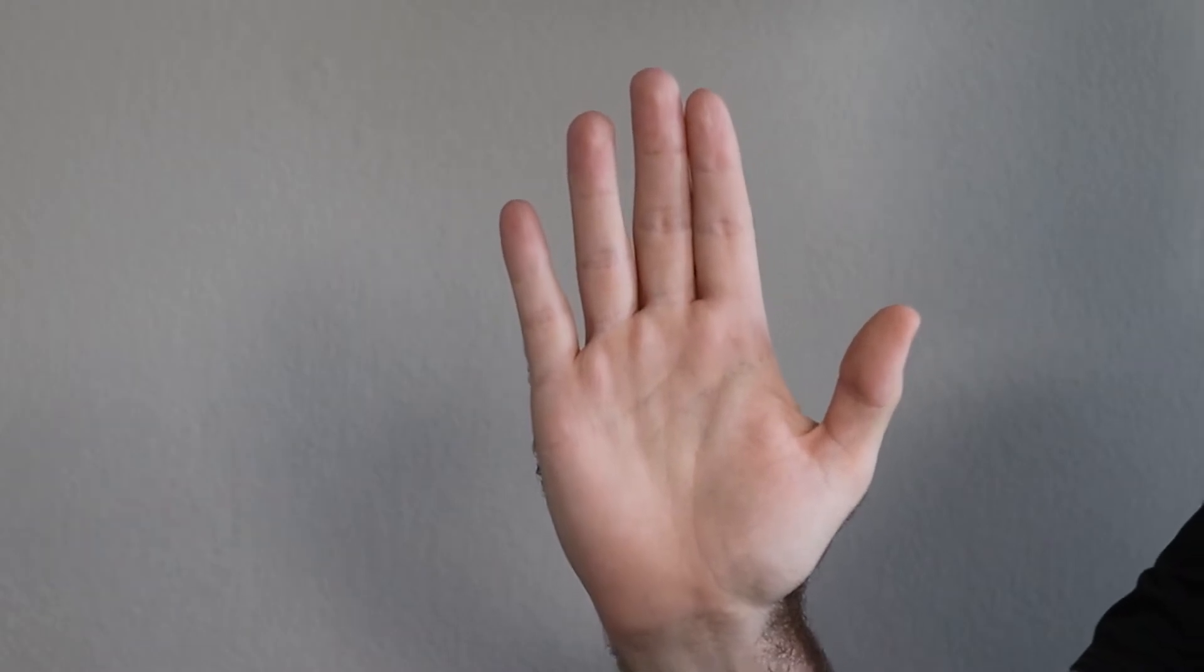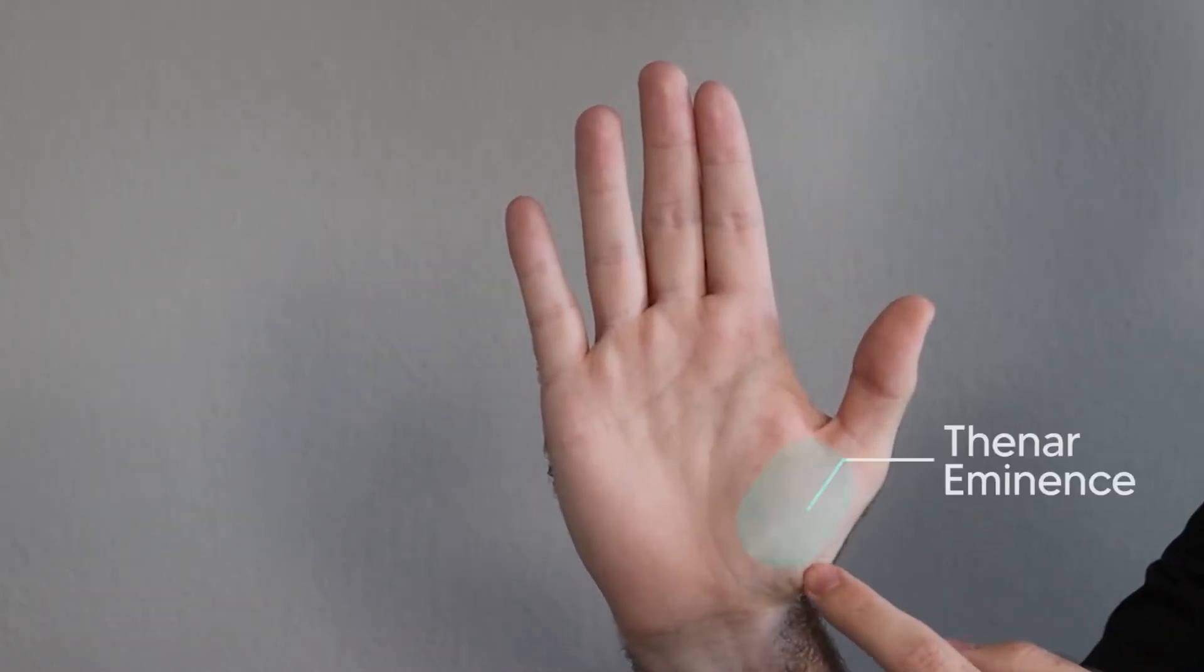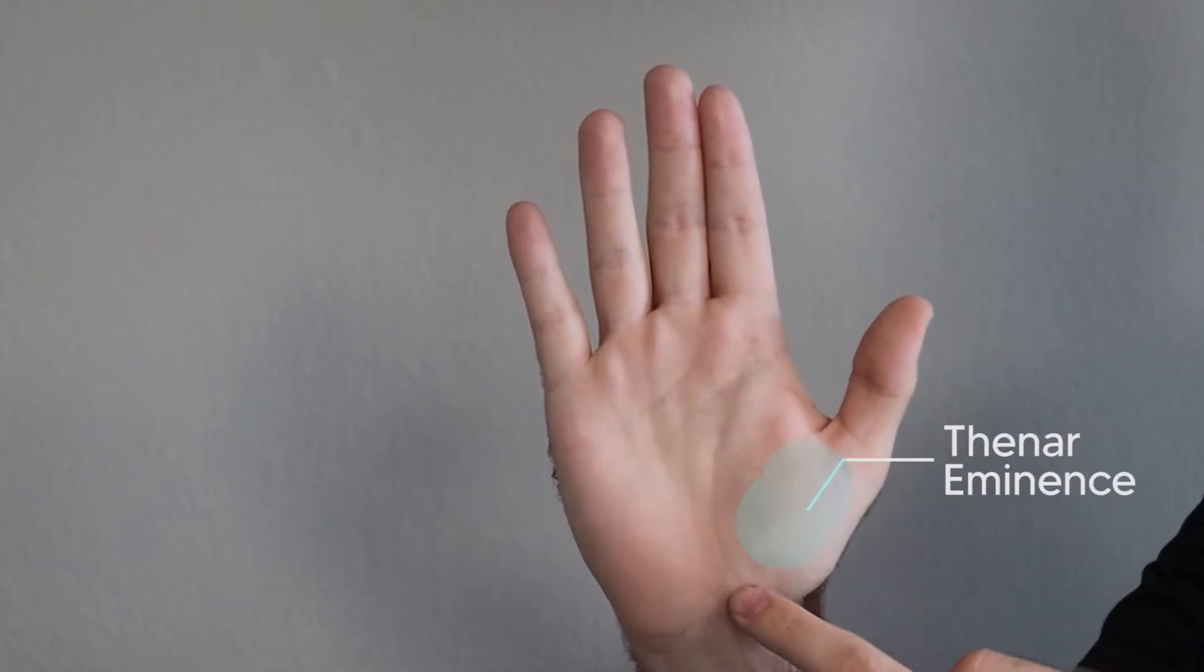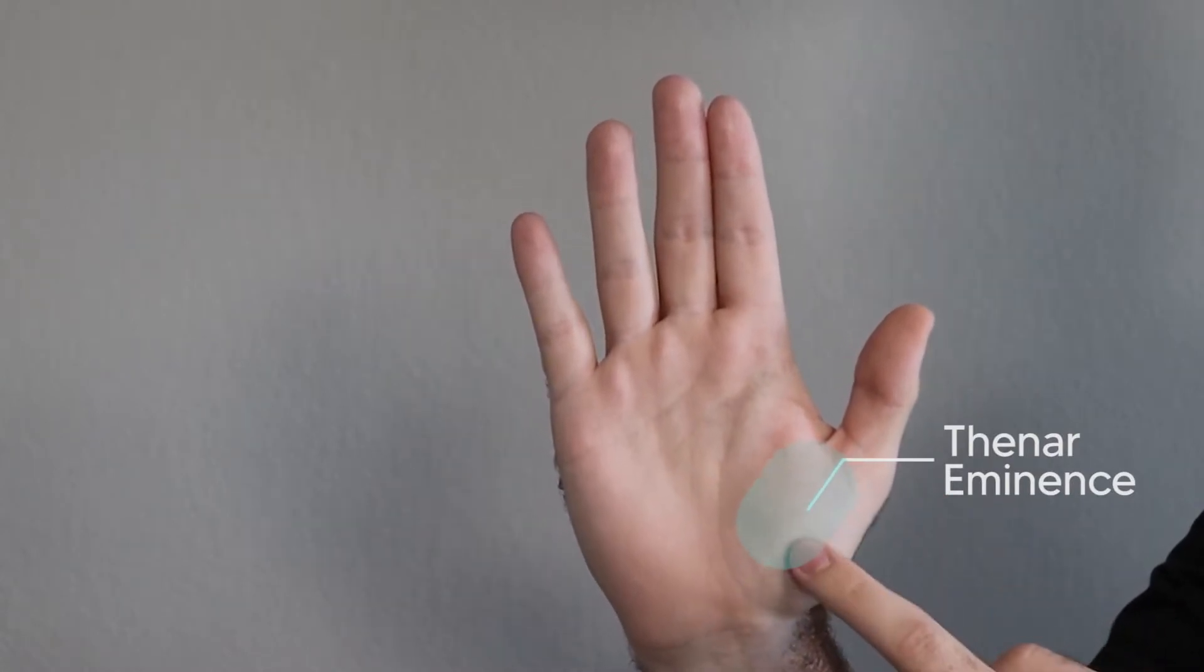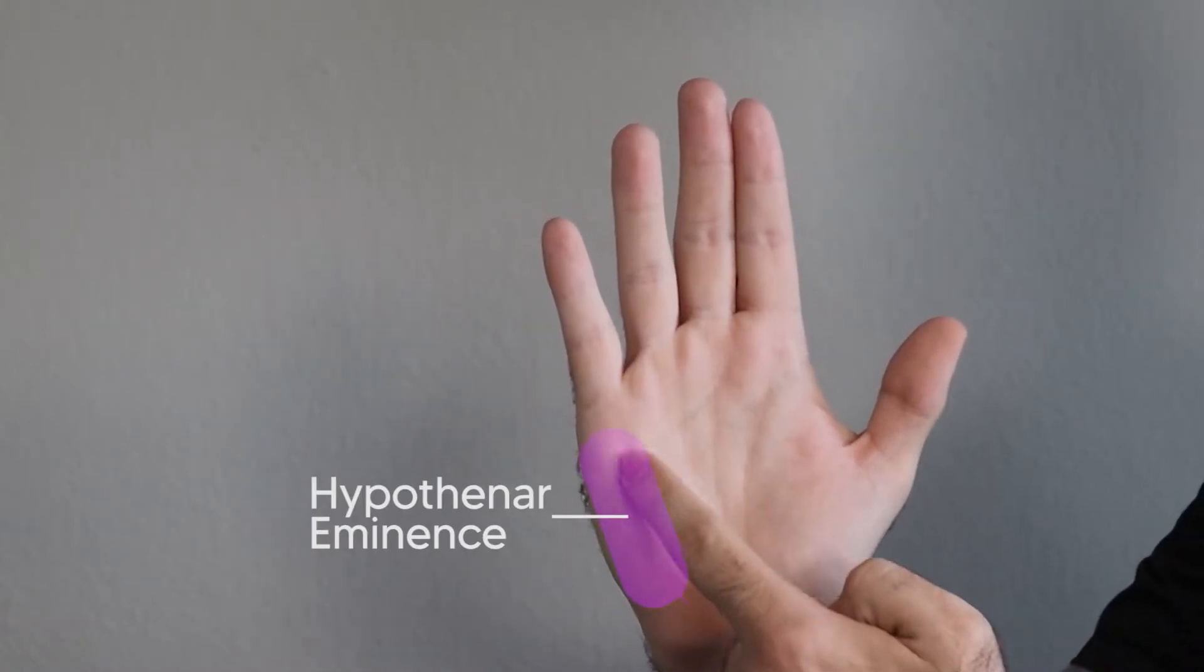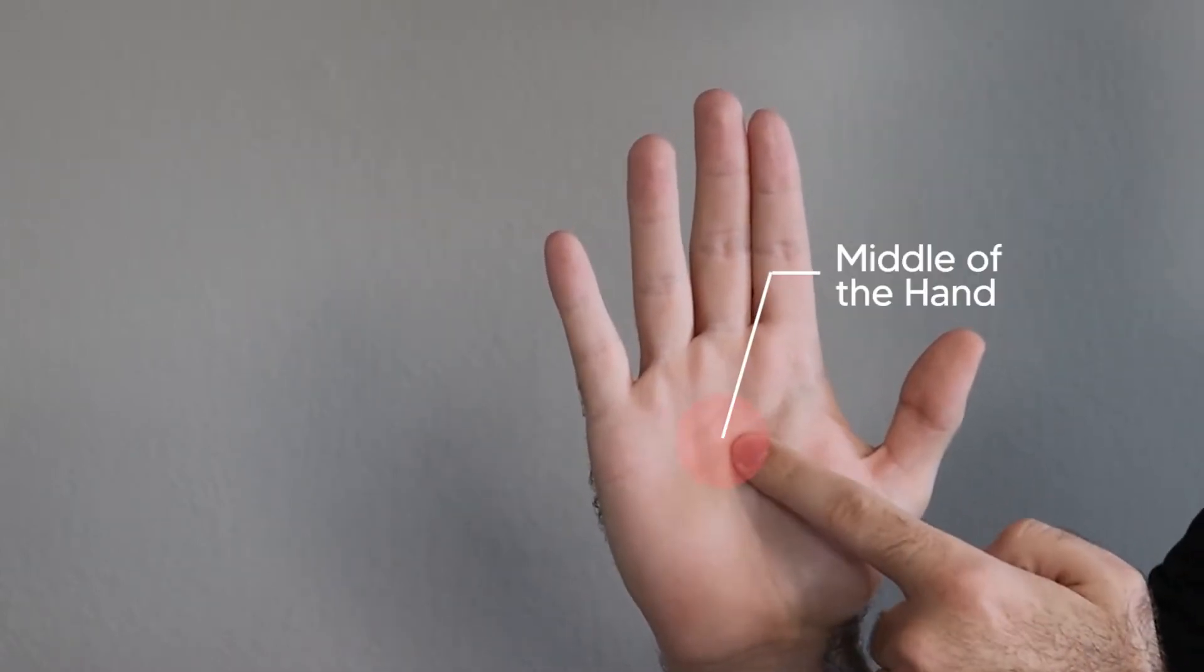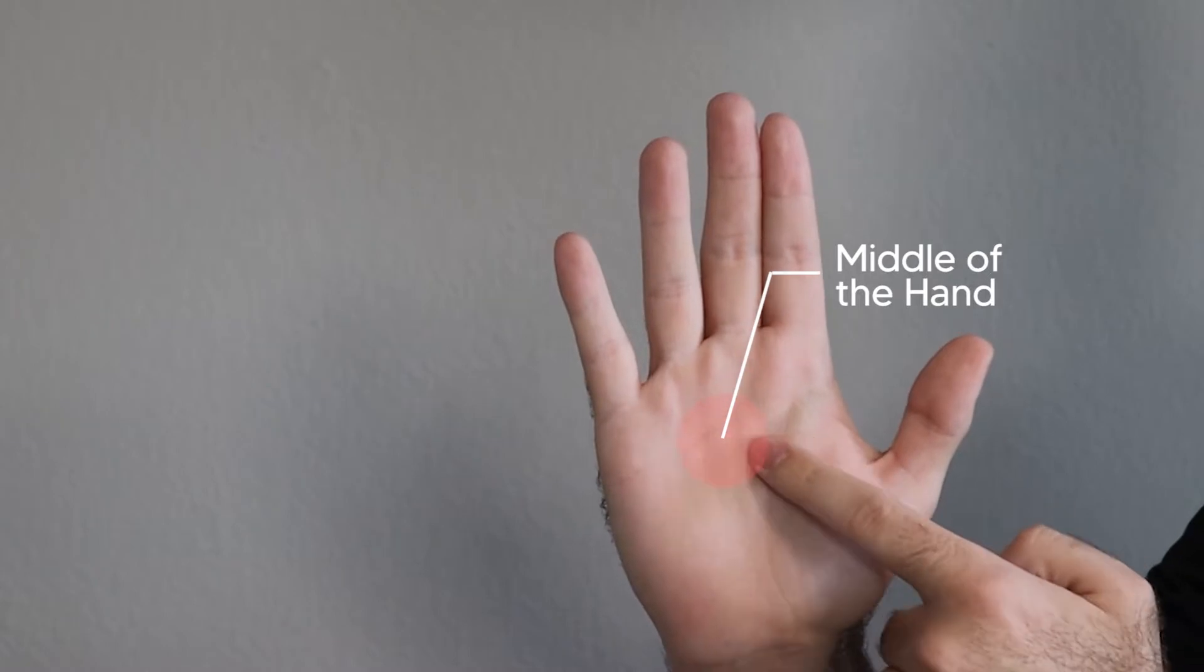Taking a closer look at the hand, there are three main areas of muscles. The first area is the thenar eminence, basically this big padded muscle directly underneath your thumb. Secondly, we have the hypothenar eminence, which is the padded muscle found directly under your fifth digit or your pinky finger. And finally, we have the muscles found in the middle of the hand, dealing and based around the metacarpals.